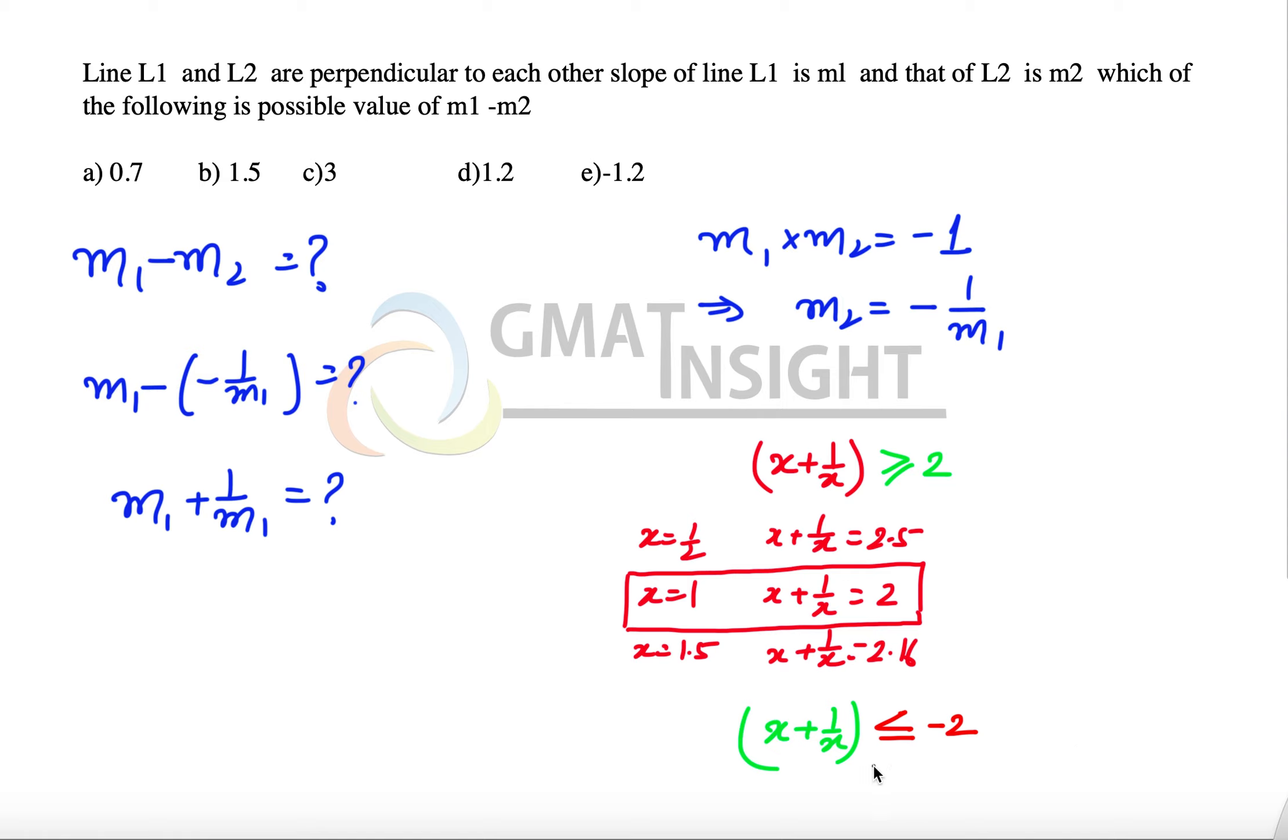Now these are two really critical observations because they're going to help us answer this question. Such questions have already appeared in GMAT based on this kind of algebraic expression. We can understand that m1 plus 1 over m1 will either be greater than or equal to 2, or it will be less than or equal to minus 2.